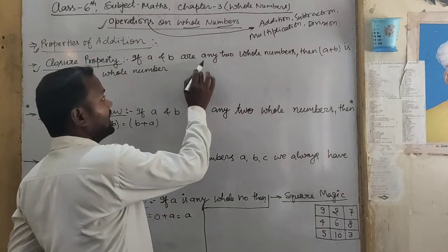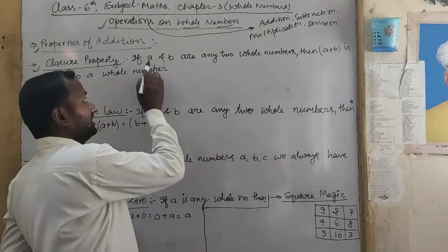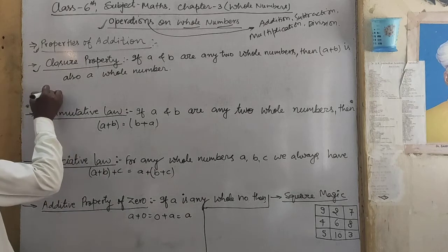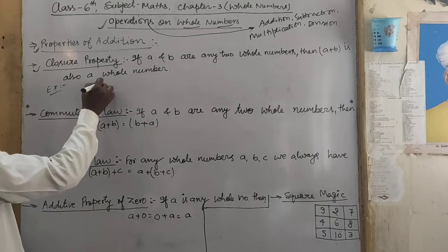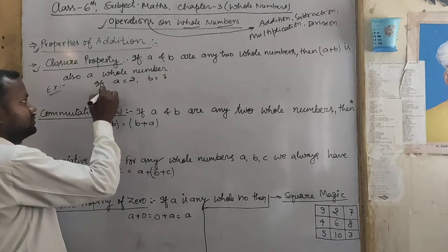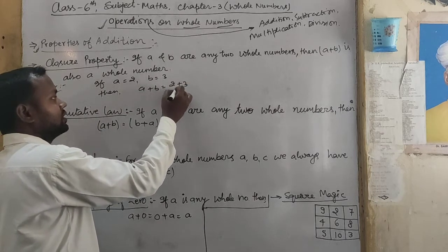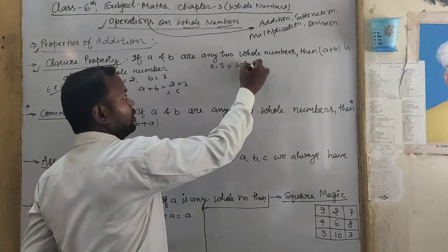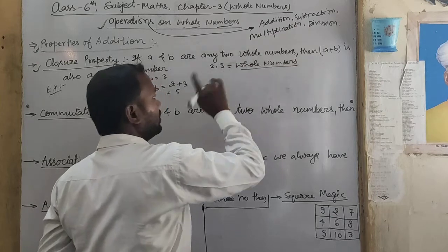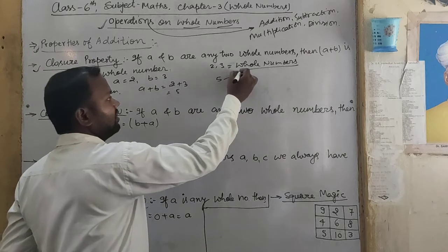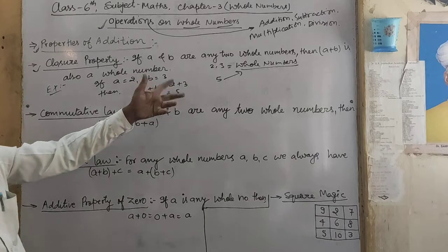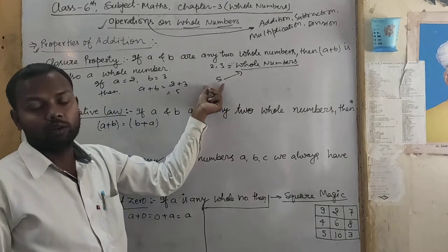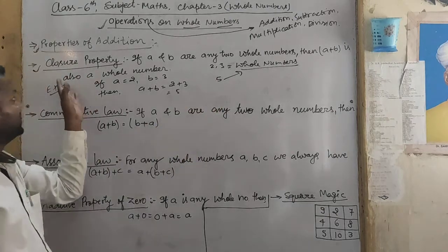What is Closure Property? If A and B are any two whole numbers, then A plus B is also a whole number. For example, if A equals 2 and B equals 3, then A plus B equals 2 plus 3 equals 5. So 2 and 3 are whole numbers, and 5 is also a whole number. It means if we add two whole numbers, we will always get a whole number.